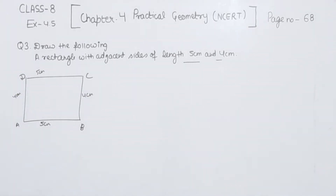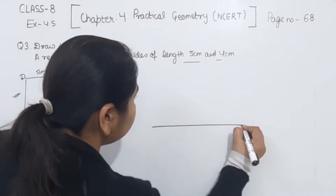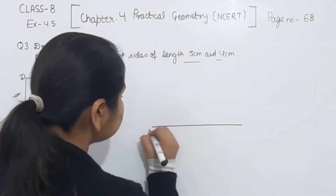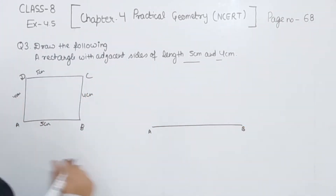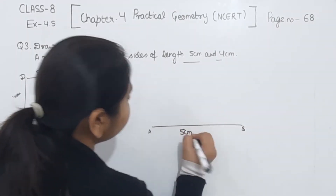Now we are going to draw this one. For that, first of all we are going to take the base as AB, which is 5 cm.